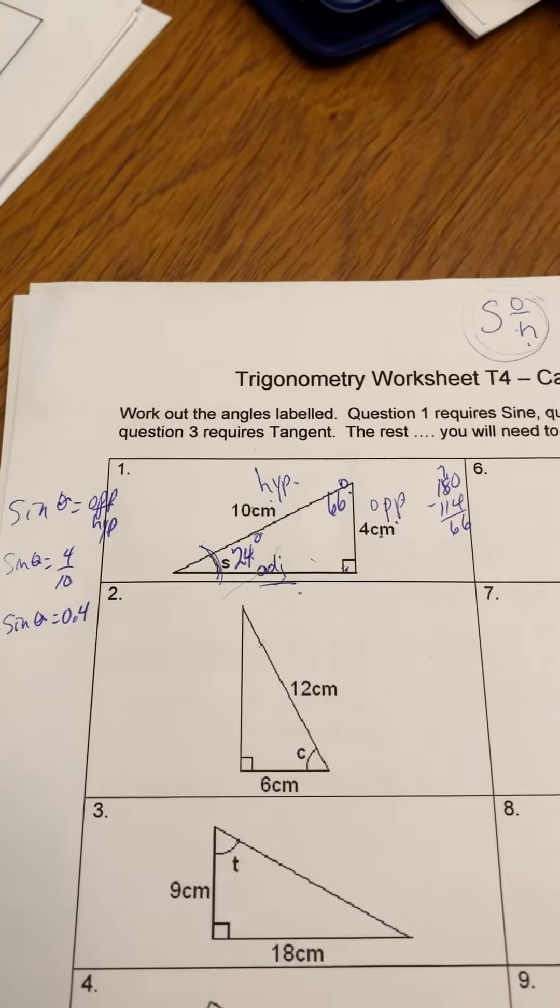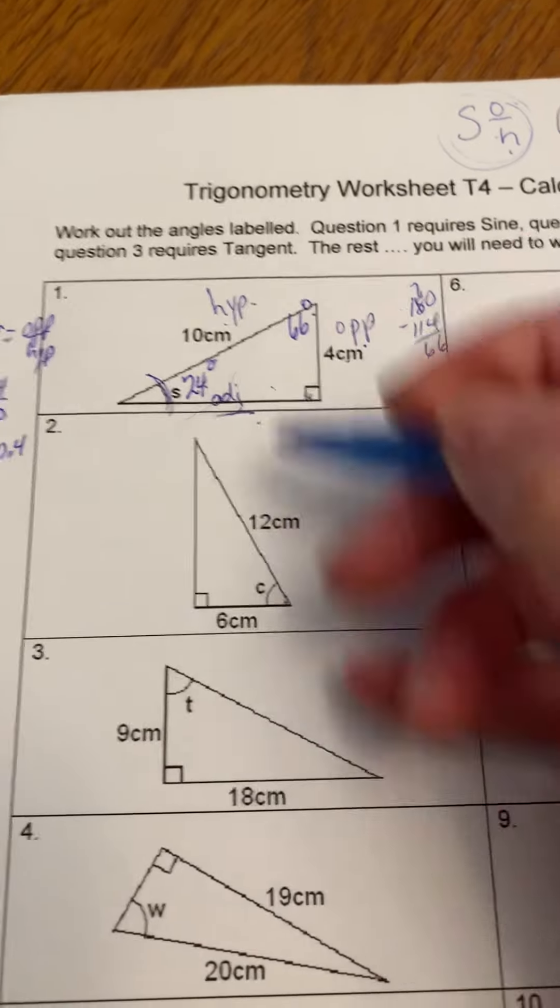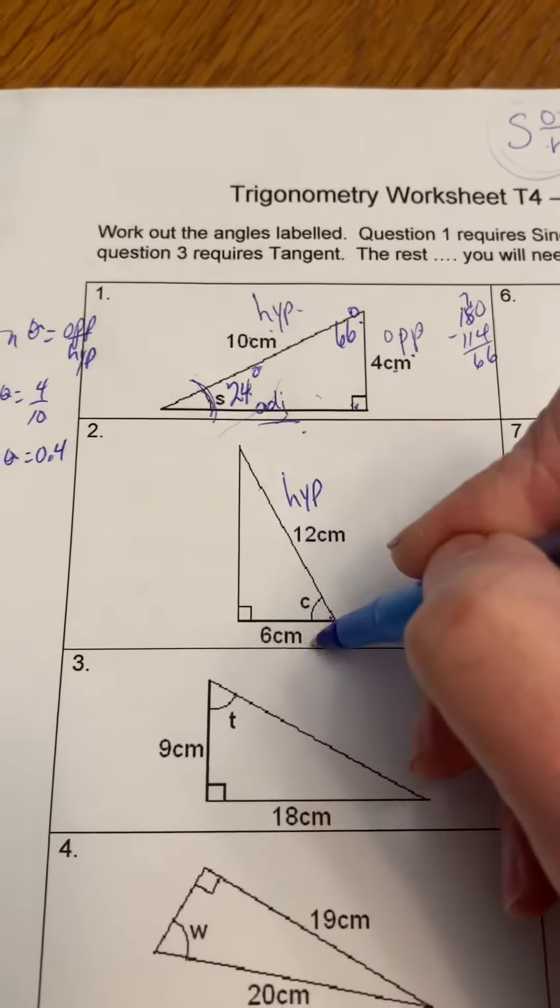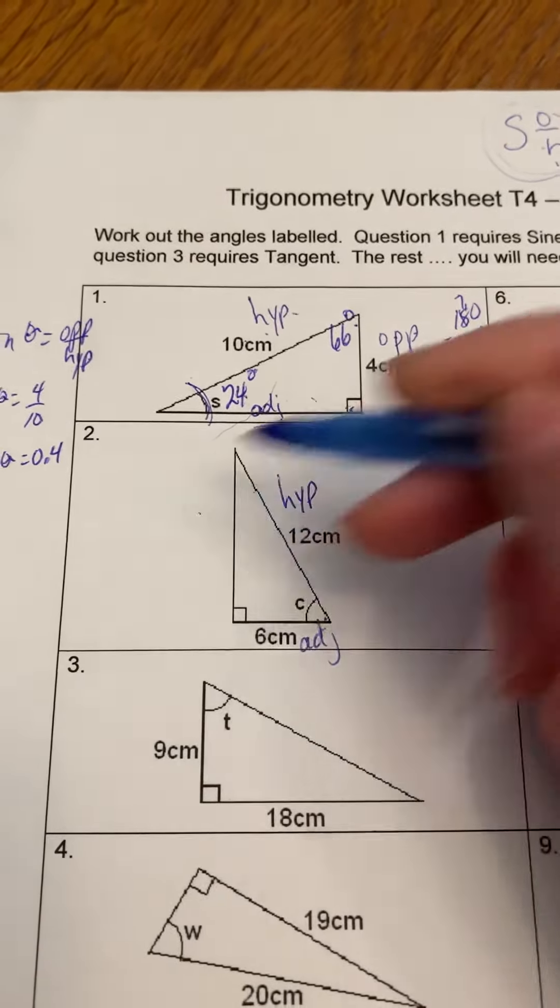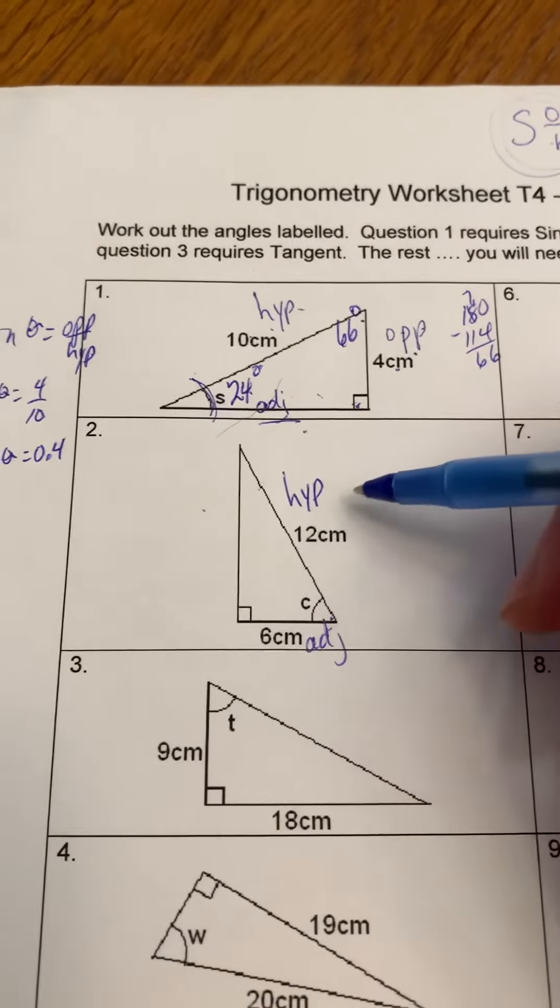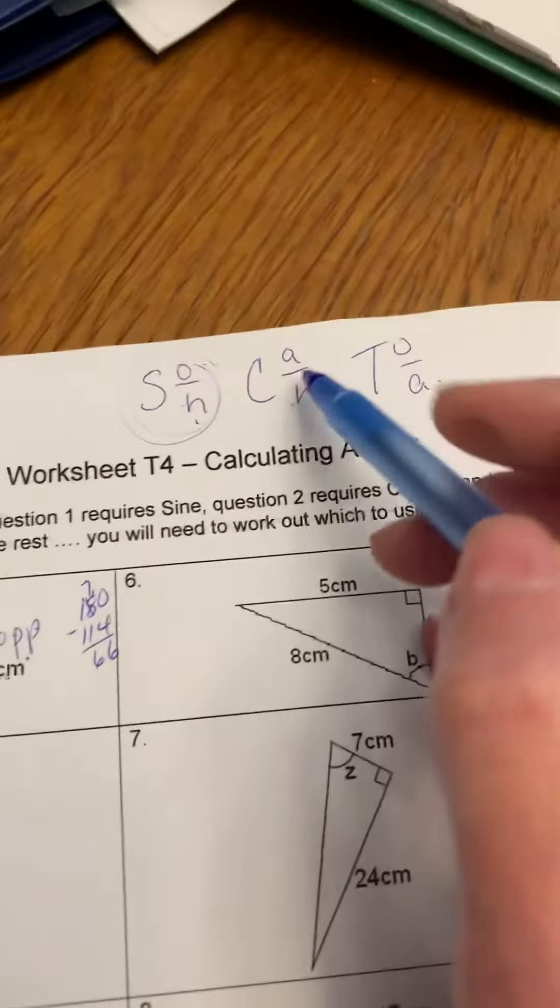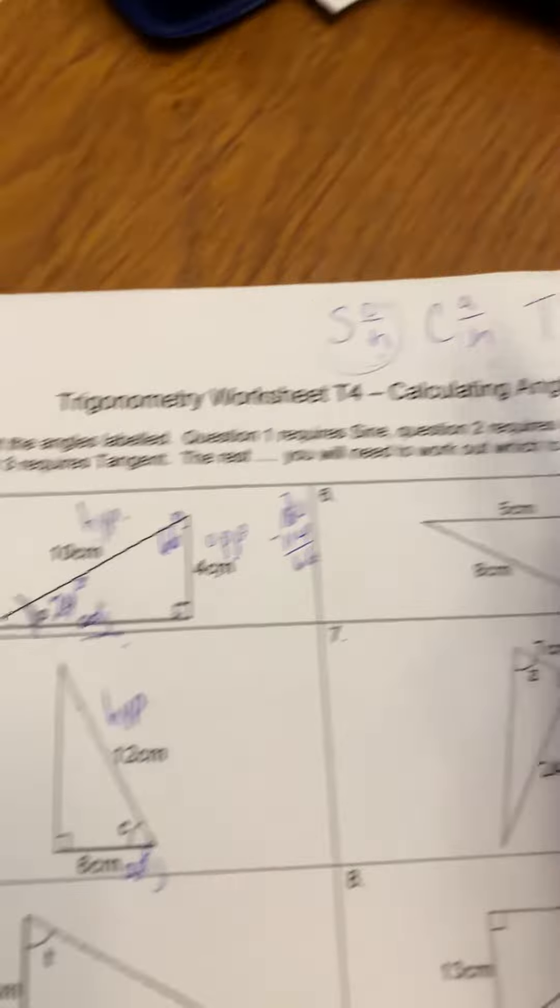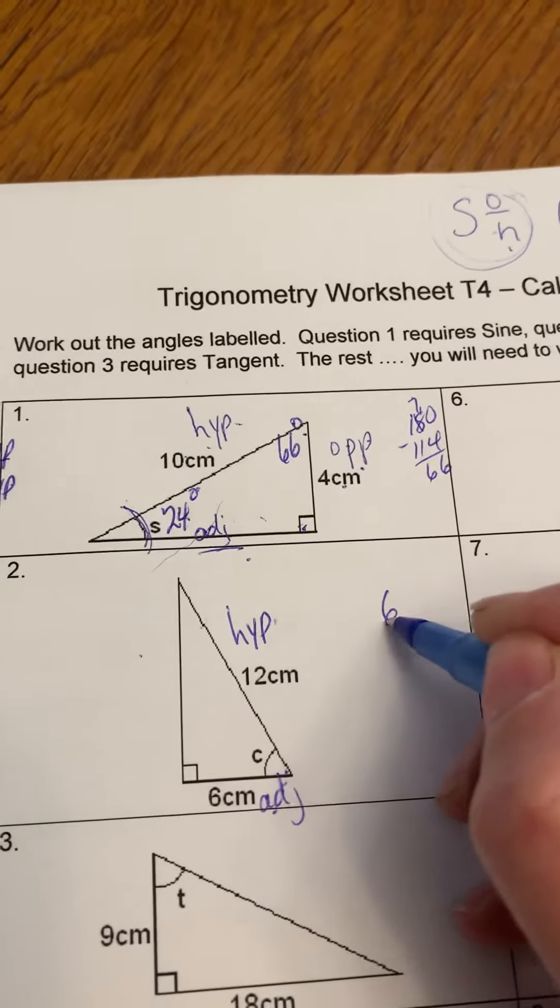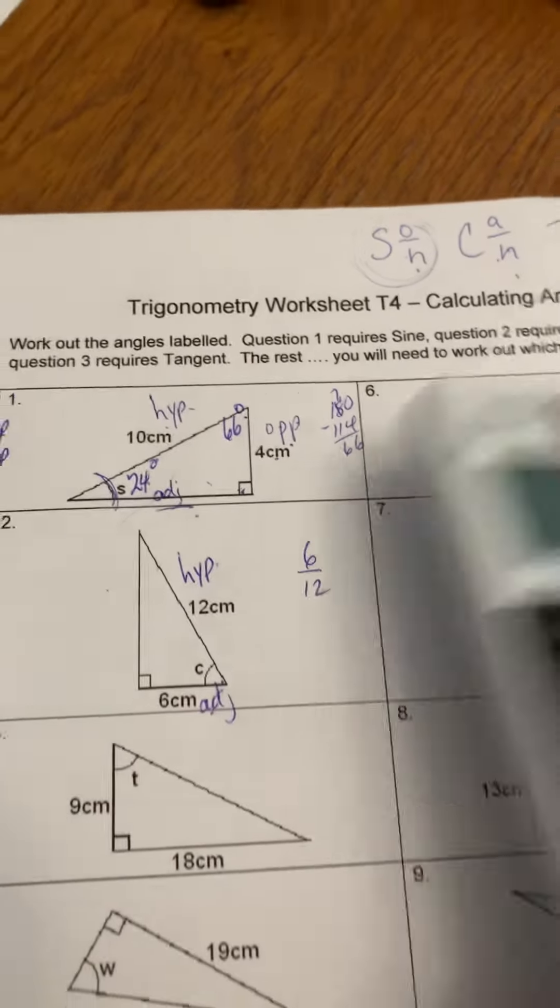Okay, so in question number two, here's our given angle. This is a hypotenuse, this is my adjacent side. We don't worry about this, we're not given a measurement for that. What uses adjacent and hypotenuse? Cosine. Adjacent divided by hypotenuse: 6 divided by 12.